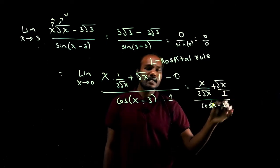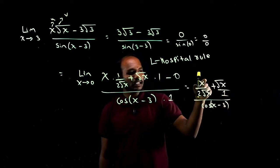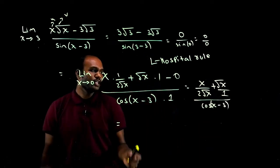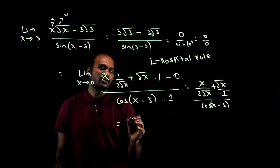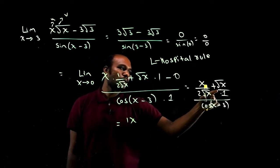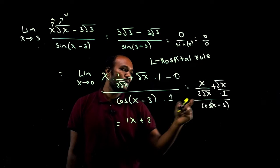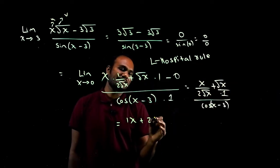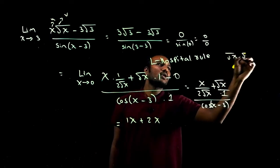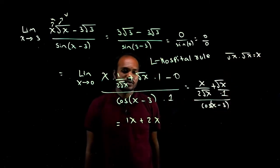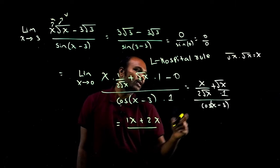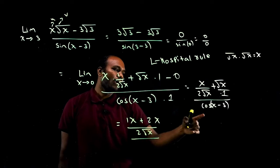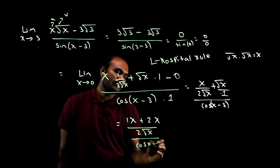Taking LCM for the numerator: 1·x + 2·√x·√x, which gives x + 2x = 3x... simplified as (x + 2x) over 2√x. So we get (x + 2x) / (2√x) divided by cos(x minus 3), which simplifies to 3x over 2√x, divided by cos(x minus 3).